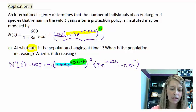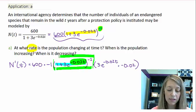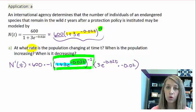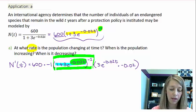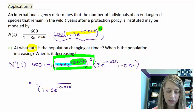Okay, let's see if we can actually simplify what's going on here. Well, the first thing that I'm going to do is I'm going to say, well, all of this is to the negative 2. So let me move that down to the denominator. So I have 1 plus 3e to the negative 0.02t squared.